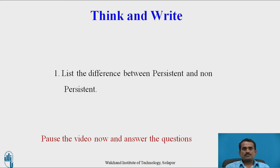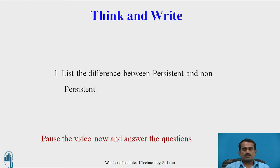Now, the next point is a reflection spot — think and write. The reflection spot contains one question. Students can think over that question and write the answer. The question is: list the differences between persistent and non-persistent CSMA. Now pause the video and answer the question.